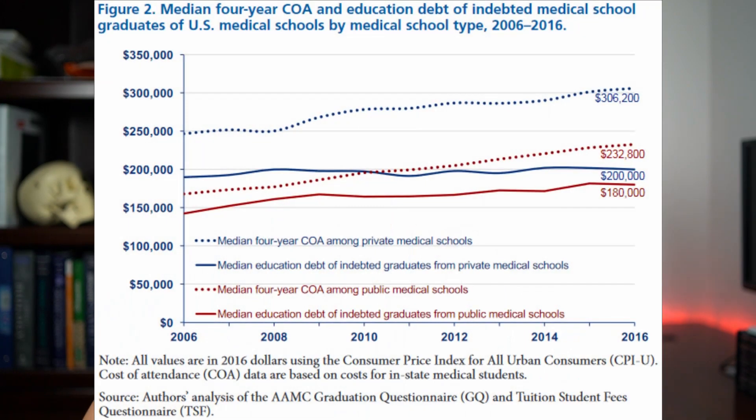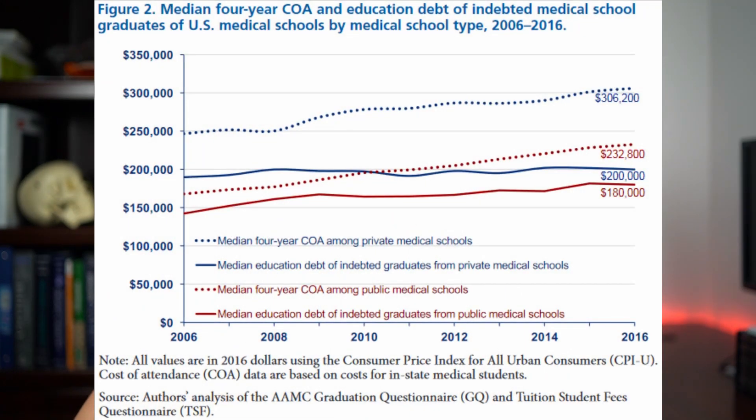These are tuition costs — they don't include living or anything else except the additional fees and health insurance the school provides. Now let's look at the cost of attendance, which is another table from the AAMC. This figure shows the median cost of attendance for private versus public medical schools, including all fees: living costs, tuition, and other items.